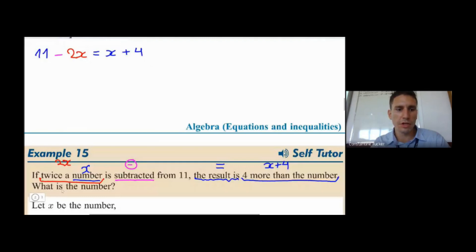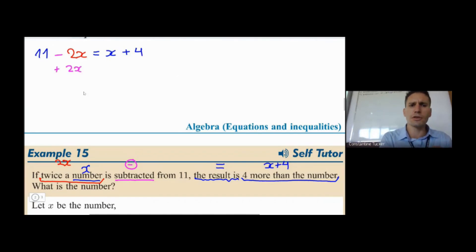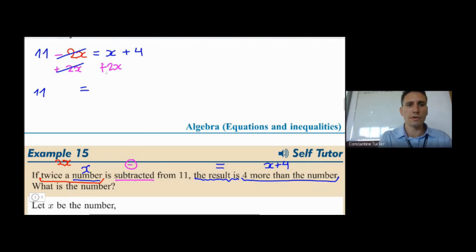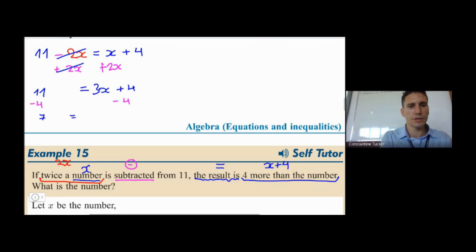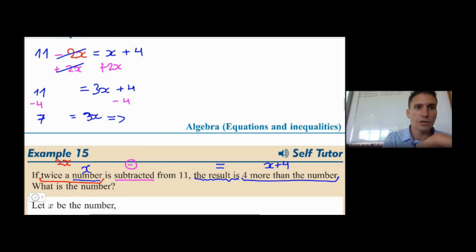Let's solve it. I'd add 2x to both sides: the minus 2x and plus 2x cancel on the left, leaving 11 equals x+2x+4, which is 3x+4. Then subtract 4 from both sides: 7 = 3x. Dividing both sides by 3 gives x = 7/3.